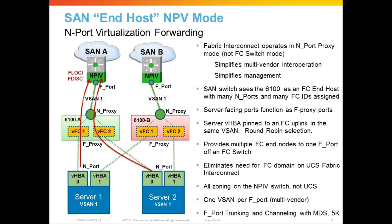Now, if you had multiple vSANs — servers in, let's say, vSANs 2, 3, and 4 — because you can have an uplink only in one vSAN, you would need to provision multiple uplinks for those multiple vSANs. But ultimately, with end host mode, you have the simplicity of the management. The fabric interconnect does not appear like an FC switch that needs to be managed like a switch.